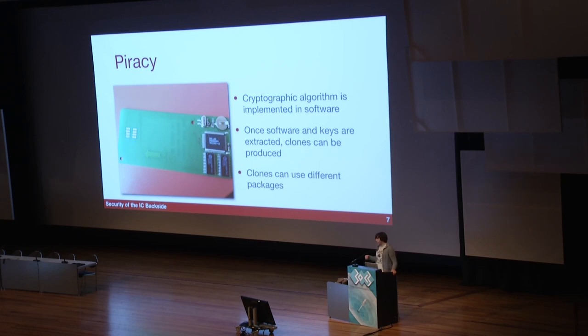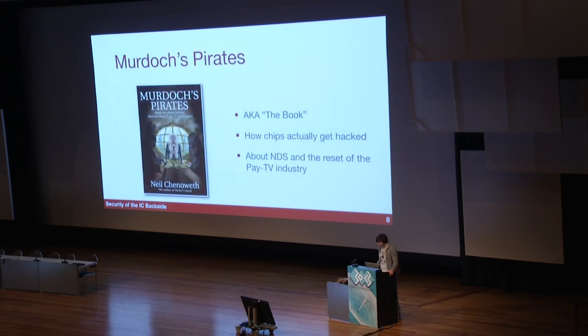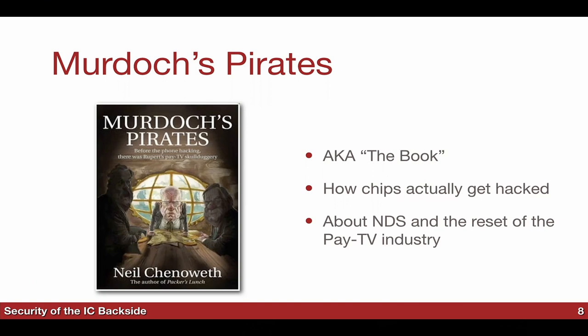This is what used to be the case for the industry. It used to be that the obfuscation — the fact that data was on the chip — was considered a big enough protection mechanism, because no one would ever be able to extract the software from a chip. Now we know that's not true. So what we'll be getting into is what they do today: implementing the cryptographic algorithm in hardware instead, which makes it much more difficult to attack.